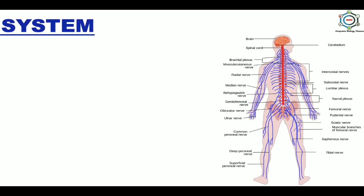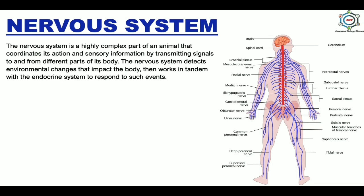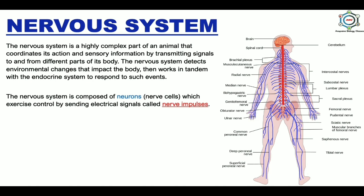Now the nervous system. The nervous system is a highly complex part of an animal that coordinates its actions and sensory information by transmitting signals to and from different parts of its body. The nervous system detects environmental changes that impact the body, then works in tandem with the endocrine system to respond to such events. In our body, many neurons are present and neurons are known as the smallest unit of the nervous system. These neurons combine to form a complete nervous system, which is responsible for controlling and sending electrical signals called nerve impulses.